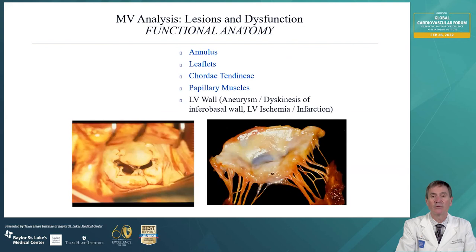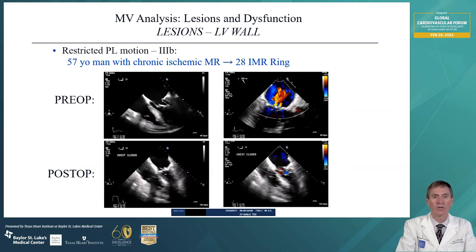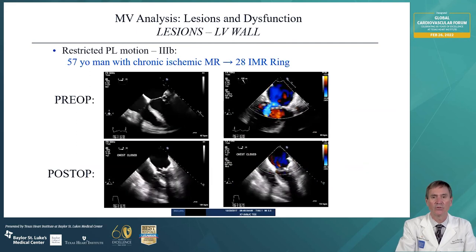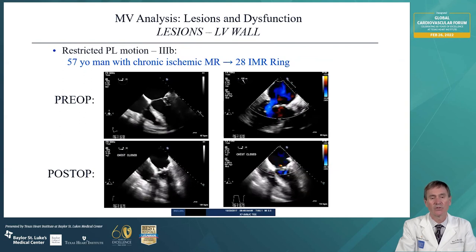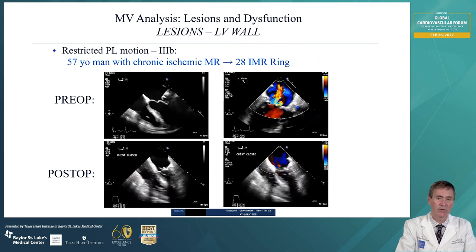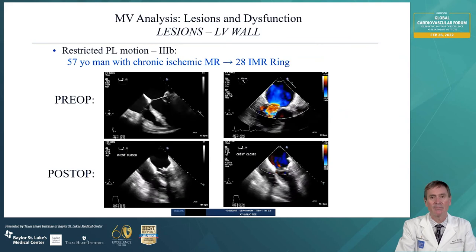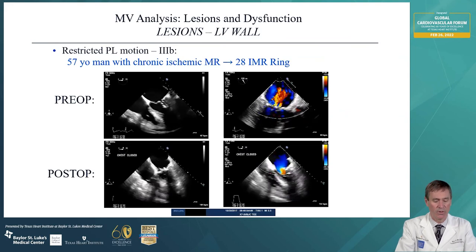Left ventricular wall aneurysms or dyskinesis of the inferior basal wall can cause regurgitation due to limited motion of the posterior leaflet. Here's a restricted posterior leaflet in a 57-year-old gentleman due to an ischemic area in the circumflex — it was not bypassable. So we did a 28 millimeter ischemic mitral regurgitation ring that compensates for the asymmetrical dilatation, and we were able to get an excellent result with long-term no regurgitation.